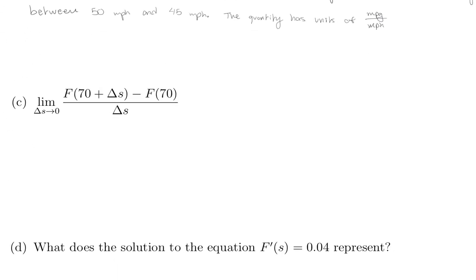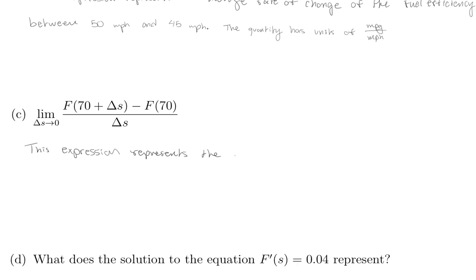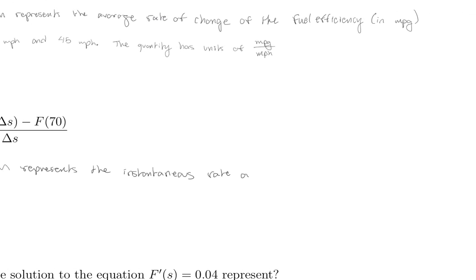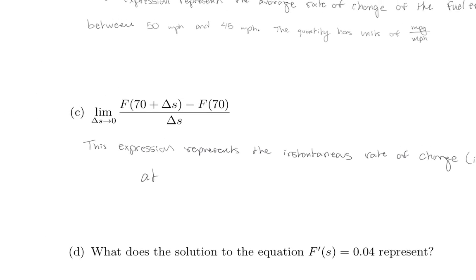On to part c. We should recognize this as the limit definition of the derivative. So this expression represents the instantaneous rate of change in fuel efficiency, which is given in miles per gallon over miles per hour, at 70 miles per hour. 70 miles per hour comes from the fact that that's where we're evaluating the expression.